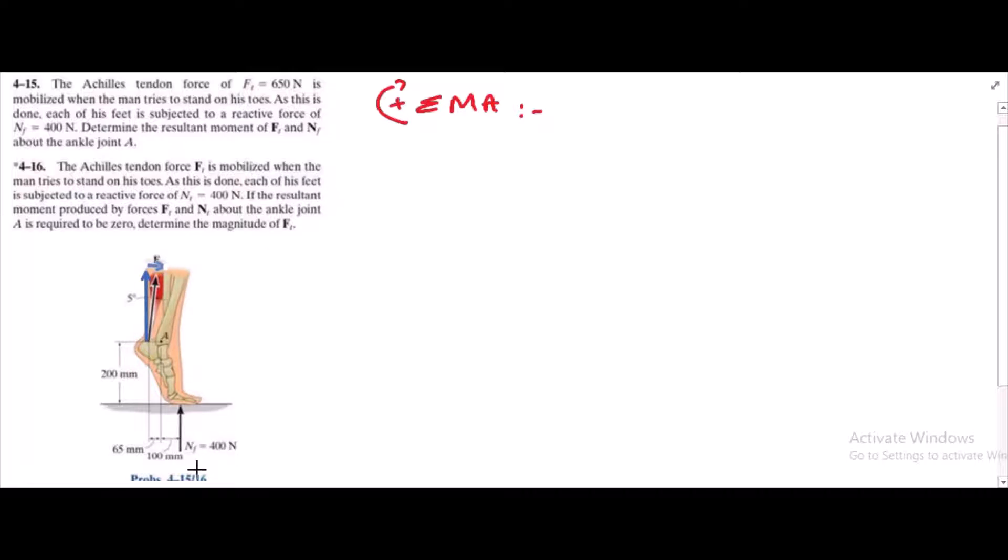The normal reaction force has only one component which is the vertical component. Now, to sum up the moment, first of all, let's label them. This is Ft cos 5 degrees and this component is Ft sin 5 degrees.